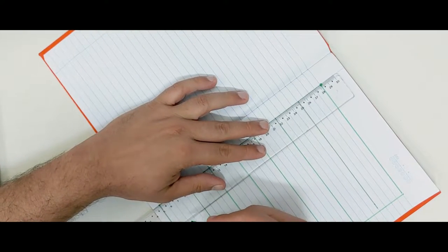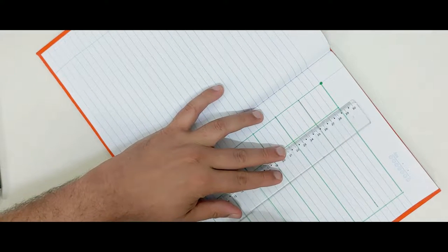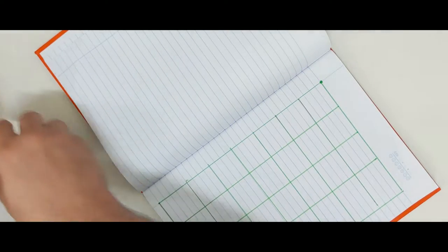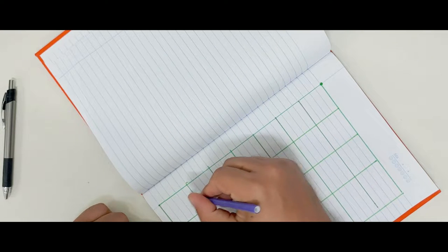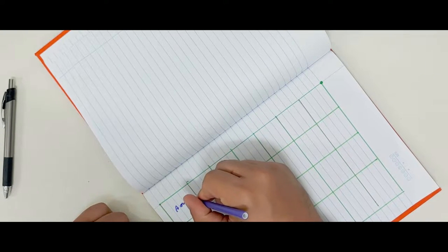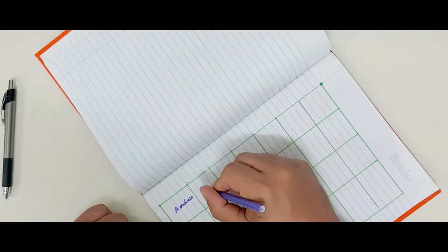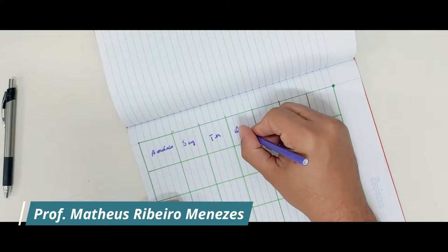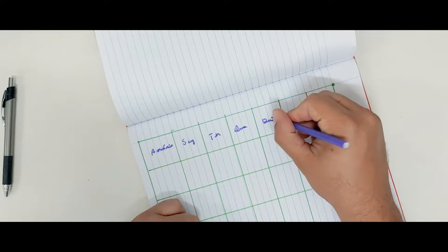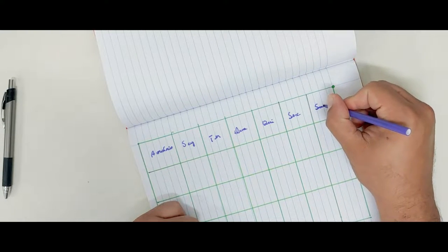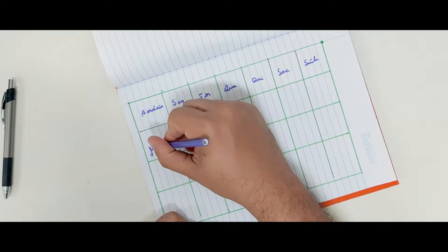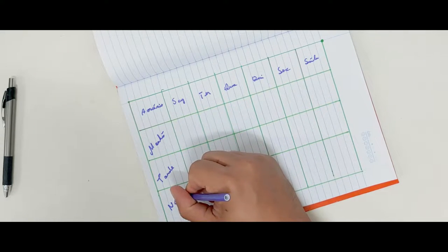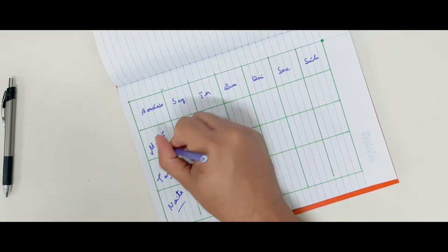Vou pegar o verde ainda. Segunda, terça, quarta, quinta. Vai que sábado a gente possa também ter um momento de estudar, seria interessante. Então, eu vou abreviar aqui. Segunda, terça, quarta, quinta, sexta e sábado. Manhã, tarde, noite. Olha só, eu montei mais ou menos assim.